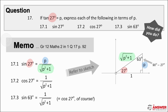Then similarly, for cos 27, again by reading off the sketch with reference to 27 degrees — adjacent over hypotenuse, or x over r — which is 1 over root p squared plus 1. You may have noticed that because 27 degrees has been placed in standard position, we can use either of our definitions — opposite, adjacent, and hypotenuse, or x, y, and r — to navigate our ratios.